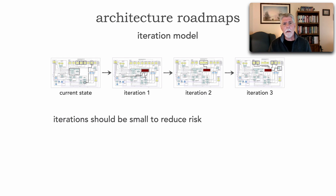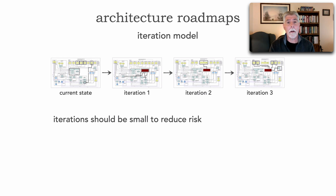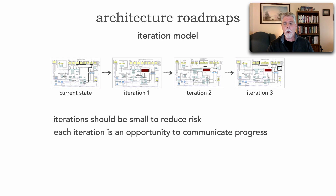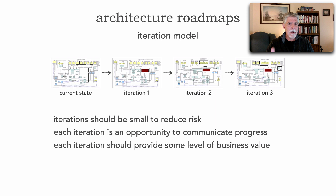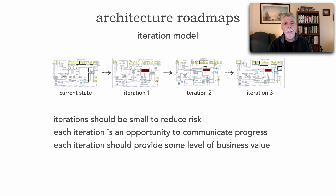Tip one: iterations should be as small as possible to reduce risk. This is one of the arts of granularity of a particular iteration, because each iteration really forms an opportunity to communicate to major stakeholders the overall progress. The other art of the iteration model is that iterations should be small enough to reduce risk; however, they should also provide some business value that we can demonstrate and communicate. So this is really the art of the granularity of iterations — it's actually rather challenging to come up with the right level of risk plus business value.